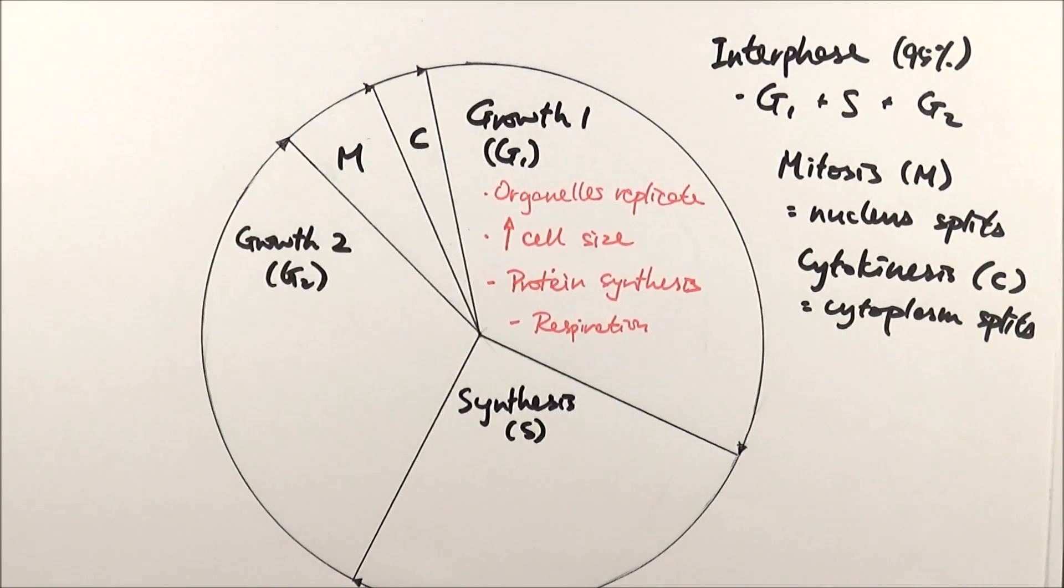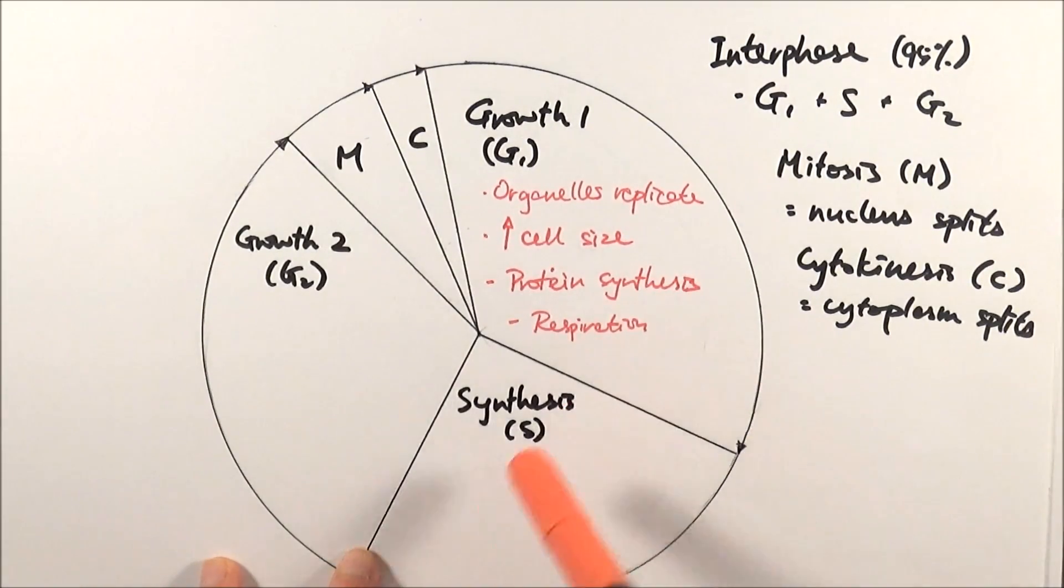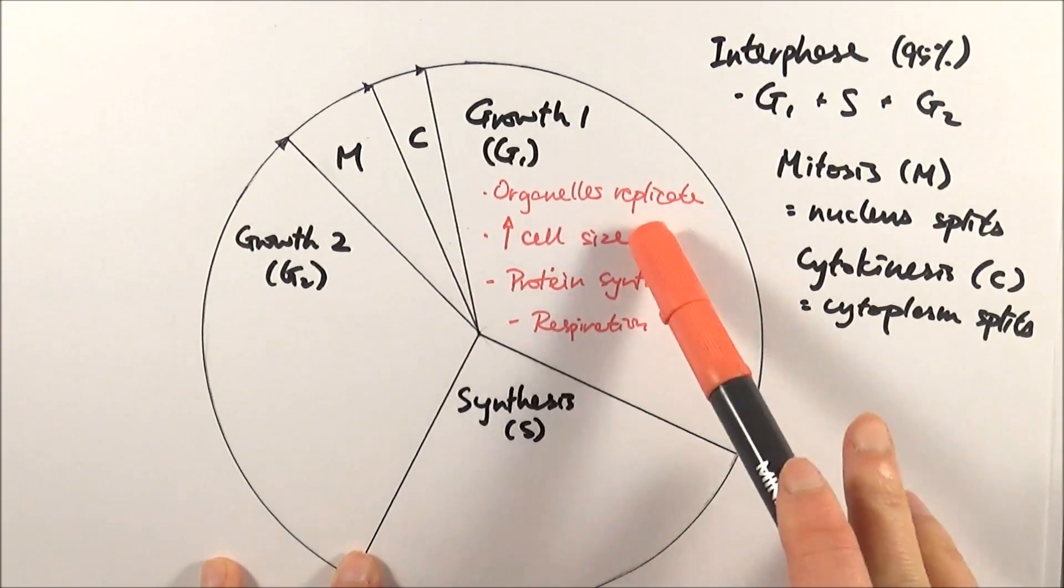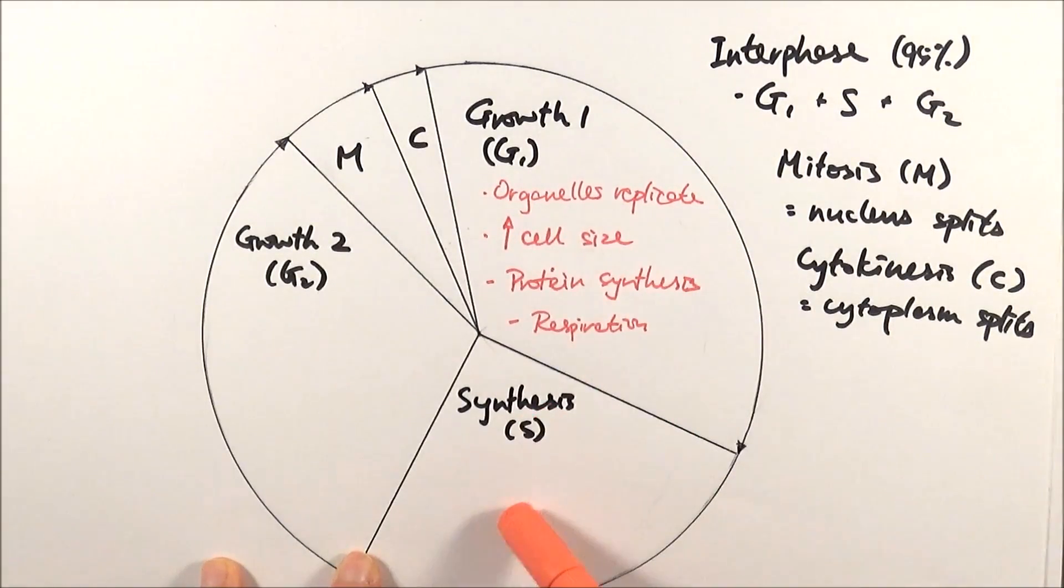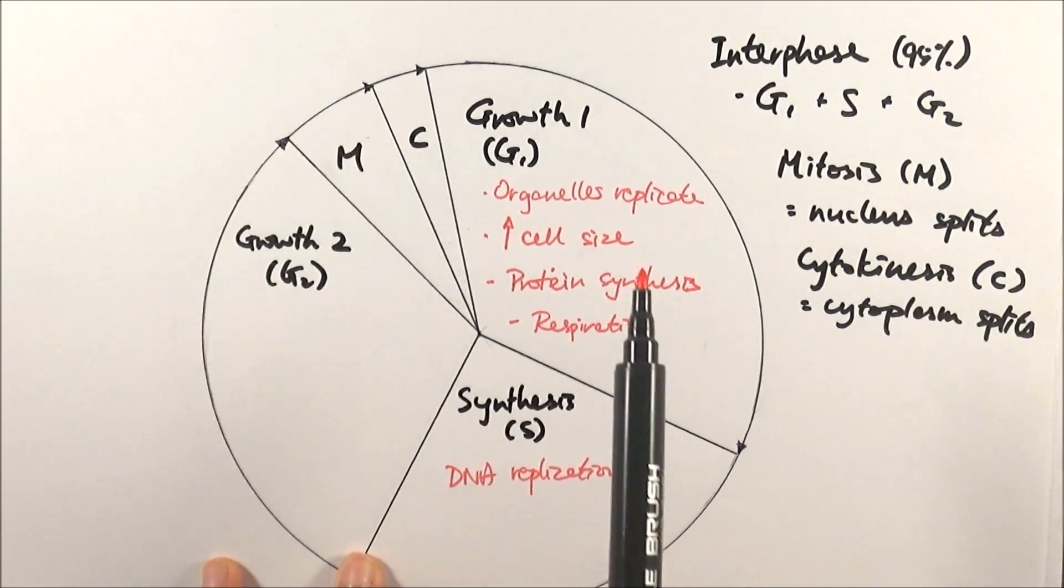What happens next is the synthesis phase. This is specifically different because here we can have organelle replication, but here is where the DNA actually replicates. Just to clarify, there will be no DNA replication in G1 or G2, but only in S, which is the synthesis phase.